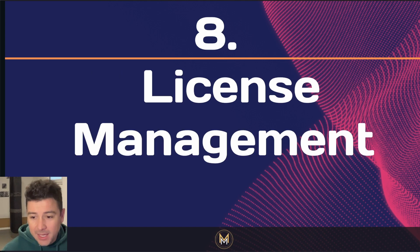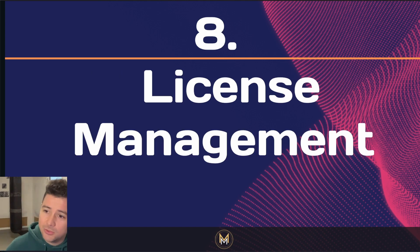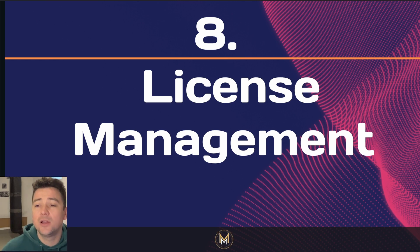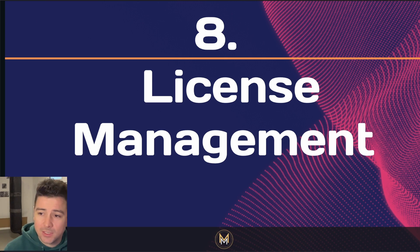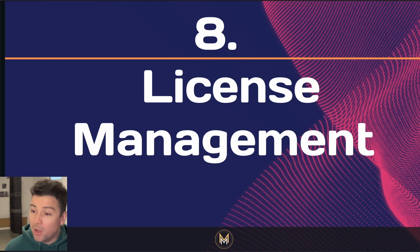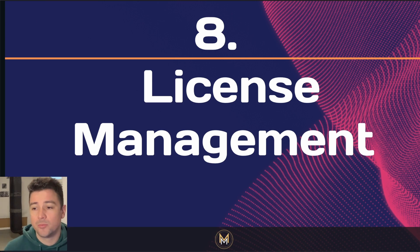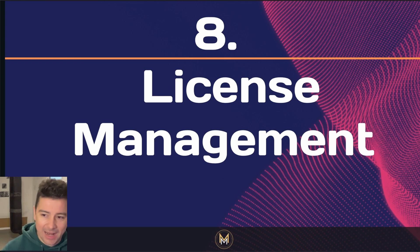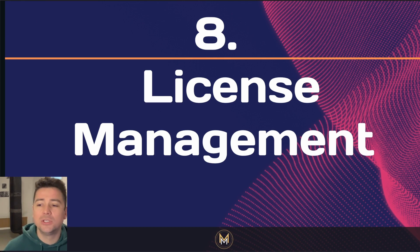Tip number eight is license management. Choose an appropriate open source license for your project and include it prominently in your repository. Licensing clarifies how others can use, modify, and distribute your code, protecting both contributors and users. Choose a license that aligns with your project goals and encourages collaboration.